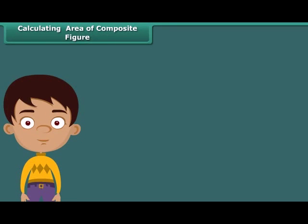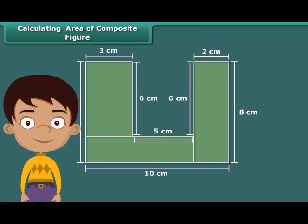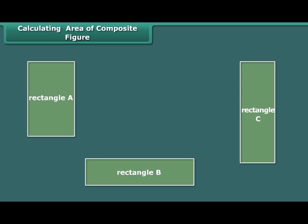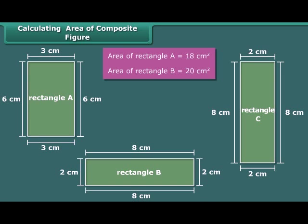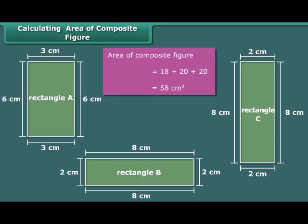Now let us calculate the area of a shape made up of multiple rectangles. First, break the composite figure into individual rectangles. Calculate the area of each rectangle, then sum up all the areas to find the area of the composite figure. Here we can divide the given composite figure into 3 rectangles. The area of rectangle A is 18 square centimeters. The areas of rectangles B and C are the same — 20 square centimeters each. Thus, the area of the composite figure is 18 plus 20 plus 20, which equals 58 square centimeters.